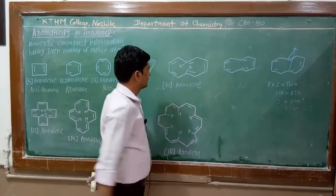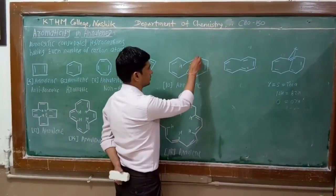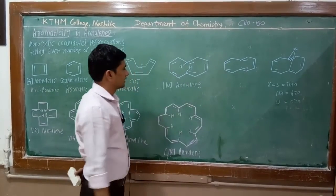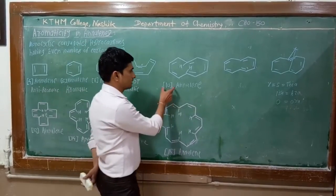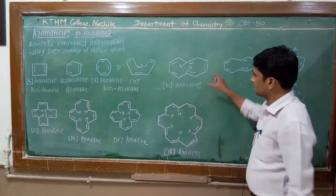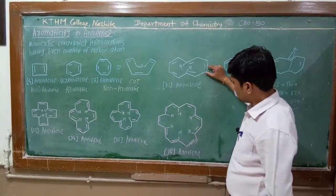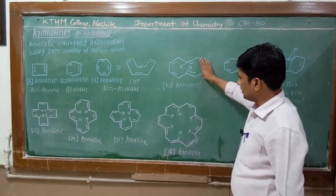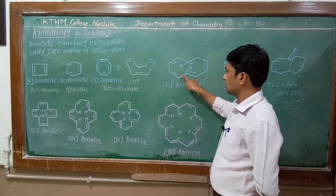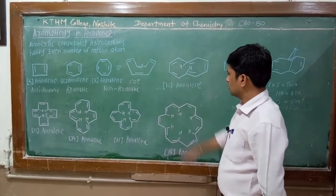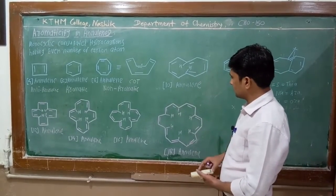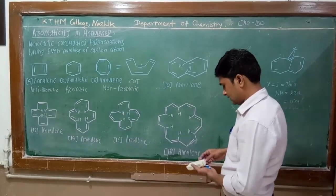This is 10-annulin. Here there are 10 carbon atoms, so it is known as 10-annulin. If we apply the Hückel rule to this compound, this is a cyclic compound and a conjugated compound — there are alternating single and double bonds. Therefore this is in conjugation. What about the planarity?